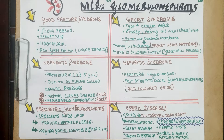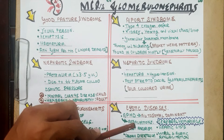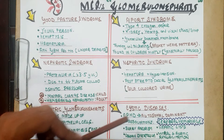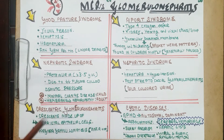Moving on to cystic diseases of the kidney — you need to remember two things. In adults, any cystic disease is autosomal dominant. Whenever a cystic disease is in children, it is autosomal recessive. In adults, the most commonly asked exam presentation is cerebral hemorrhage or berry aneurysm as associated complications.